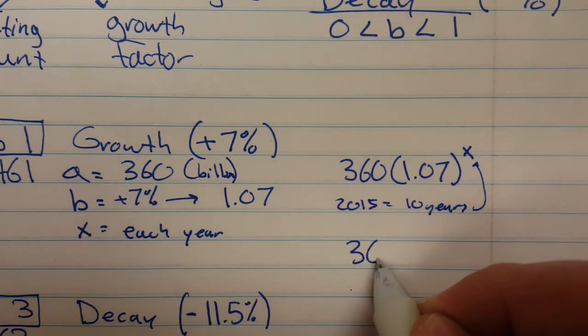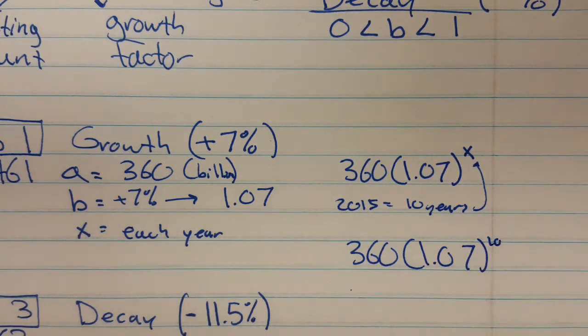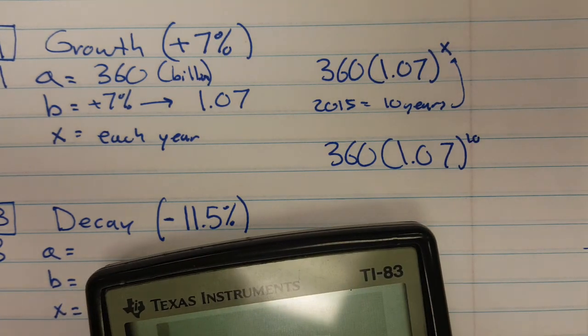So what you're going to do is you're going to put in 10 right there. So here we go. 360 times 1.07 to the 10, right? So let's see how many billions of dollars people have spent by the year 2015. So here we go.